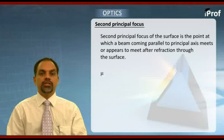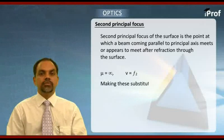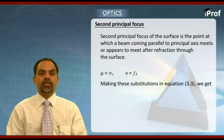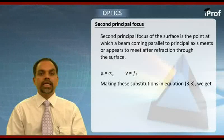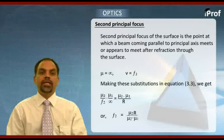Here we will be making substitution. U will be substituted as infinity and whatever we get as V will be second principal focal length. Making substitution in the basic relation for refraction from spherical refracting surface, we get the value of second principal focal length and it is mu2 times r divided by mu2 minus mu1.